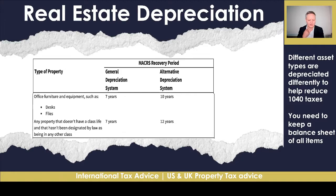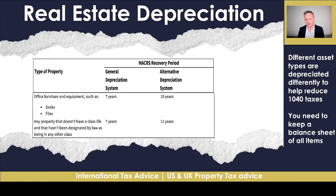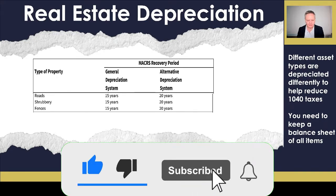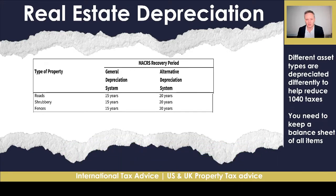Other asset classes include office furniture and equipment such as desks and files — those depreciate over 10 years. Any property that doesn't have a class life and hasn't been designated by law as belonging to another class will be depreciated over 12 years. Fences are depreciated over 20 years, so if you have a garden with dividing borders and fences, those are depreciated over 20 years, not 30.